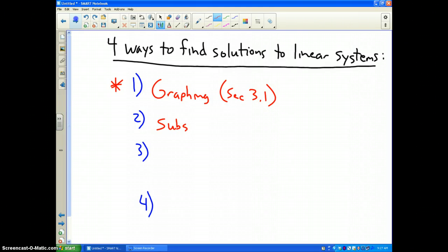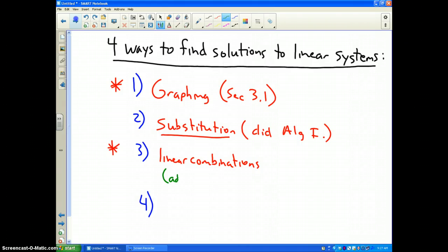Method number 2 is called substitution. This one you learned in algebra 1, so I am not going to cover it. There is actually an extra credit assignment that deals with substitution. The third one and probably the most popular is called linear combinations. There are other names for it. Sometimes people call it the addition method. Sometimes it is called the elimination method.